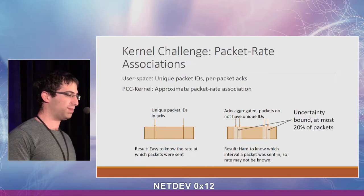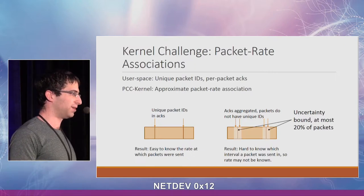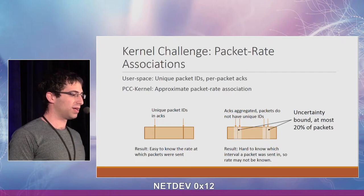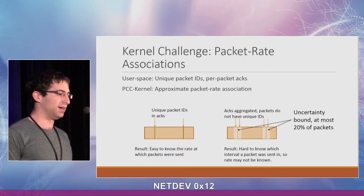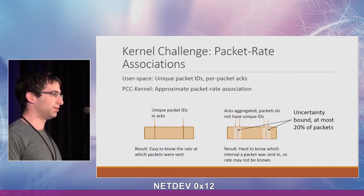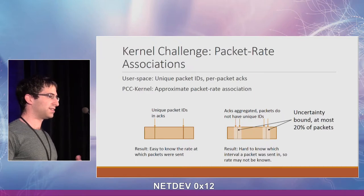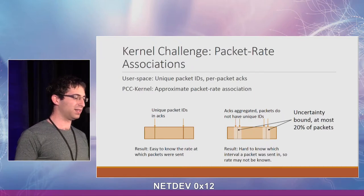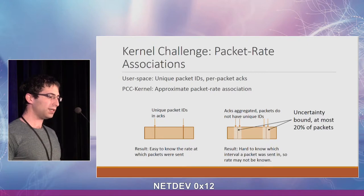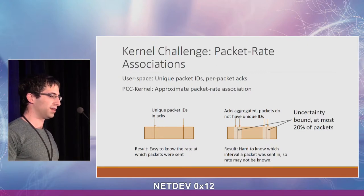For each packet, we only know approximately which interval it belongs to. To help mitigate that, we introduced an uncertainty bound to PCC: we ignore the start and end of each interval and only count statistics from packets sent in the middle of an interval. That way we won't mix up packets between intervals.